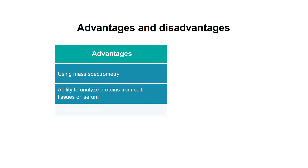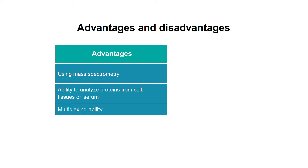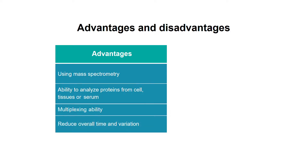Multiplexing ability is another great advantage of iTRAQ. There are eight reporter ions available, therefore achieving multiplexing at the level of eight samples. In addition, iTRAQ can reduce overall time and variation.